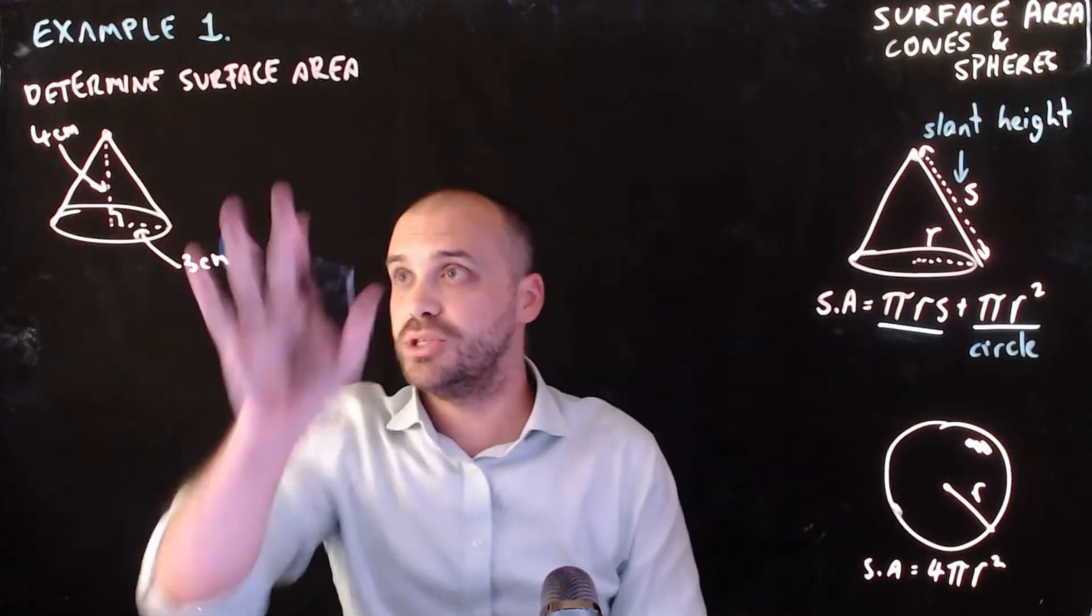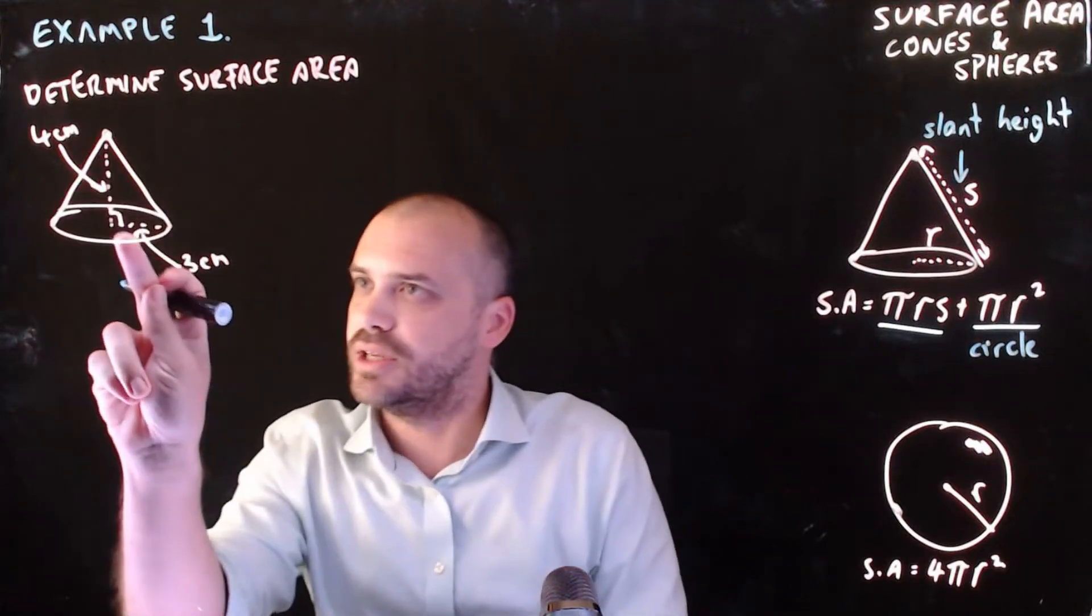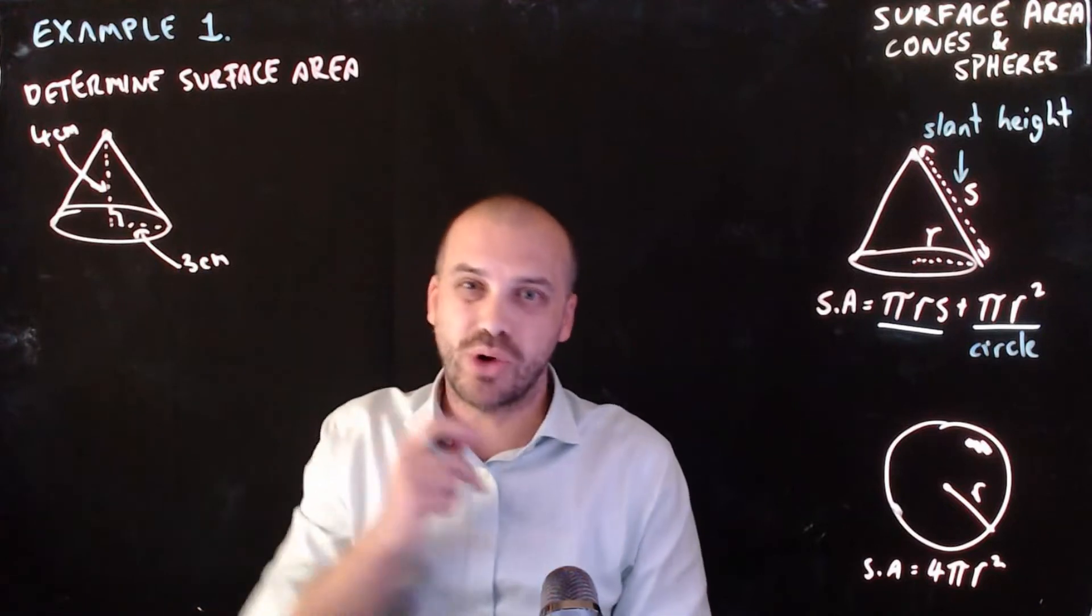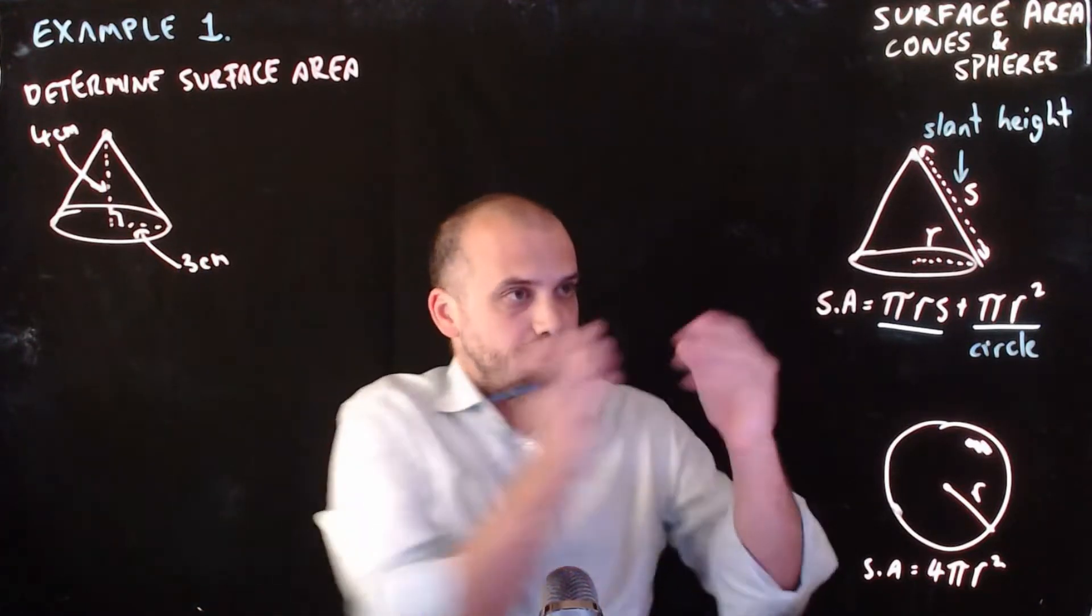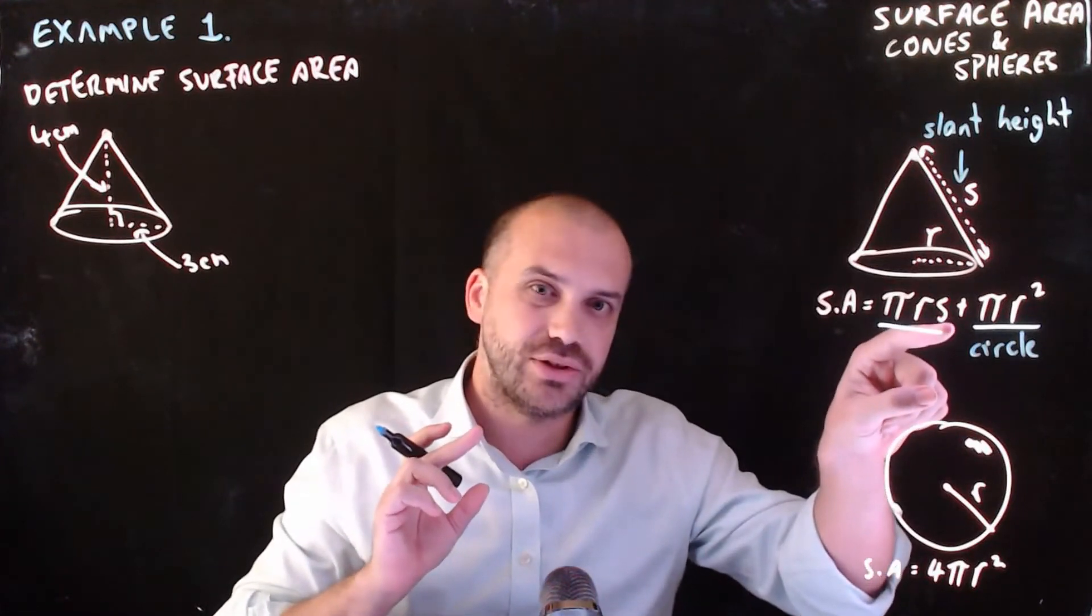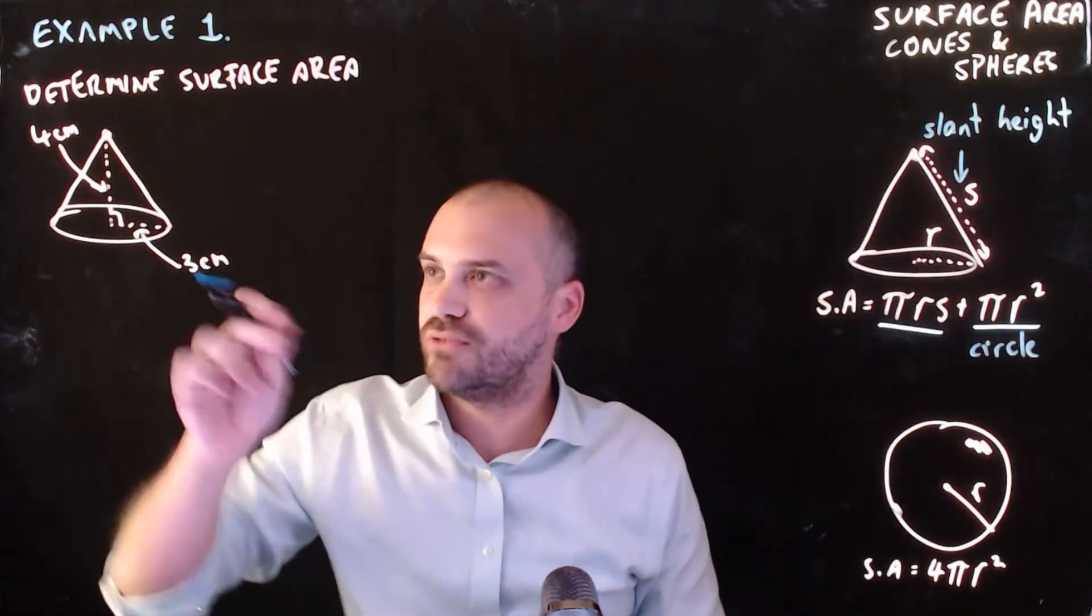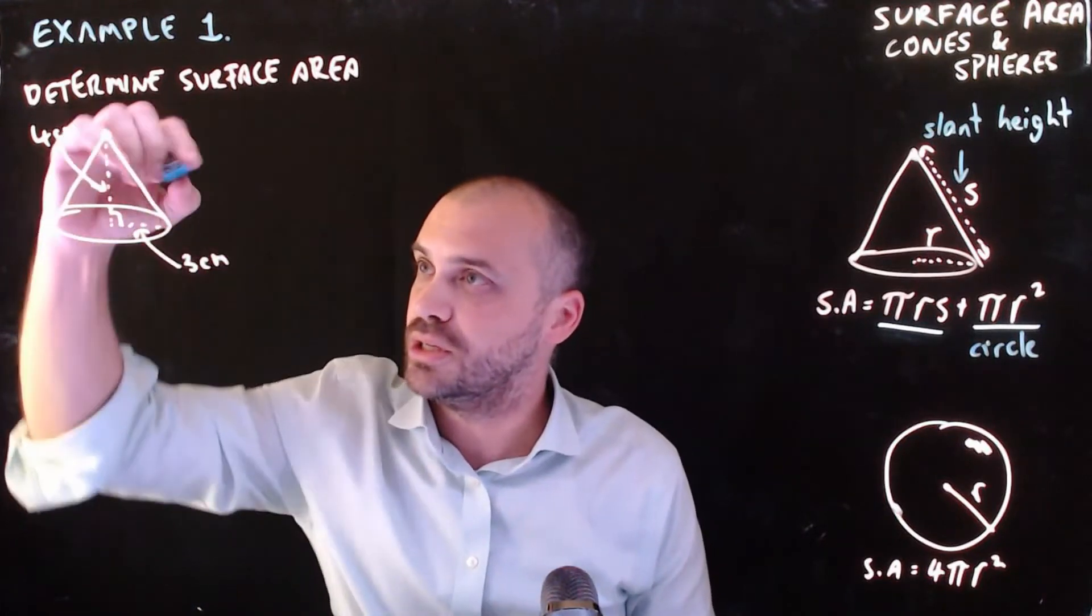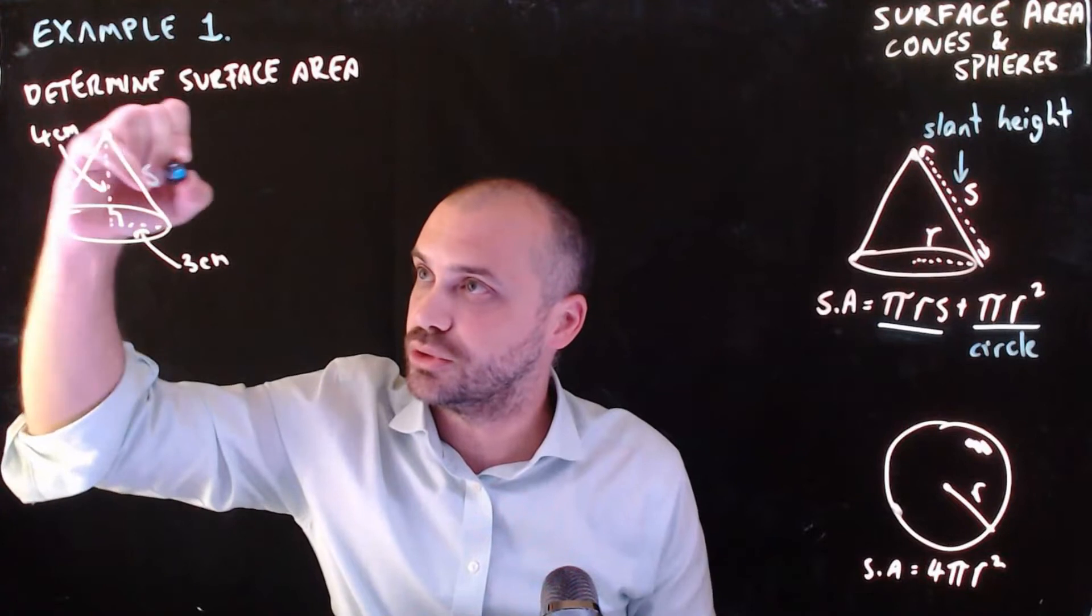So this is my first question. Determine the surface area of this cone. Now you can see it has a radius of 3, and it has a height of 4. Now that's a problem, because when we look at our formula, there is no height in our formula. Instead, there is a slant height. So if we want to find out the surface area of this shape, we're going to have to first determine the slant height, which we'll call S.